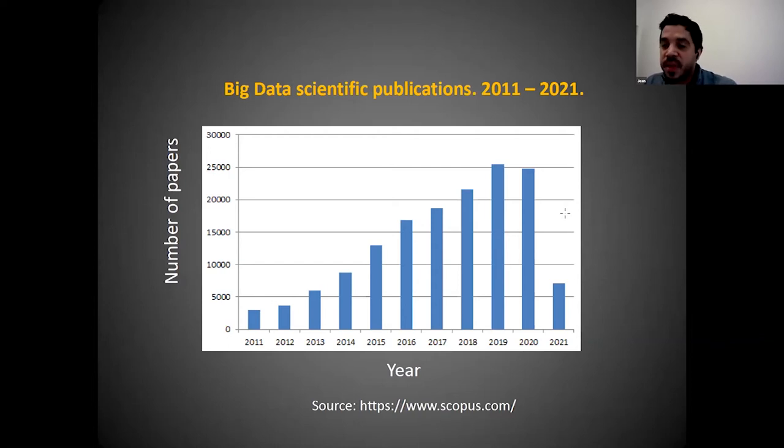Big data has been arising in the scientific and everyday world. By searching in Scopus, we found that in the last 10 years, scientific publications have increased very strongly. In 2011 there were a little more than 3,000 publications, but last year they reached about 25,000. Big data is getting very important in science.